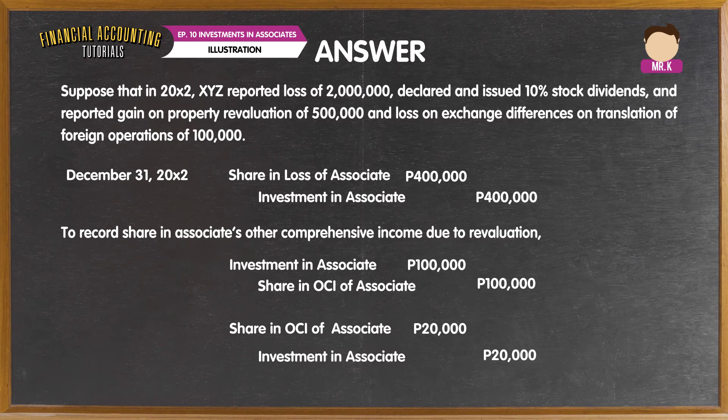Observe that all of the transactions recognized above involve either debiting or crediting the investment in associate account. Notice also that even though the number of shares held was increased by the stock dividends, the ownership interest was unaffected. This is because in stock dividends, all shareholders are given dividends proportionate to their current holdings. Please also take note that investment in associate accounted for using the equity method is classified as a non-current asset.